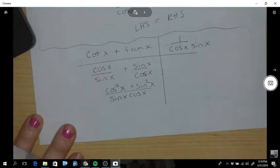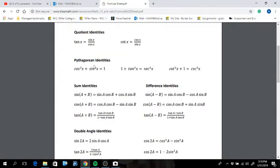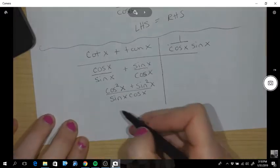Okay, now looking on your formula sheet I can see right here cos squared plus sin squared is equivalent to 1. So I'm going to replace that.